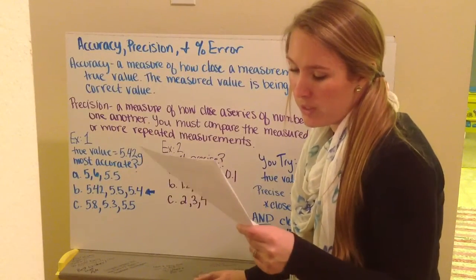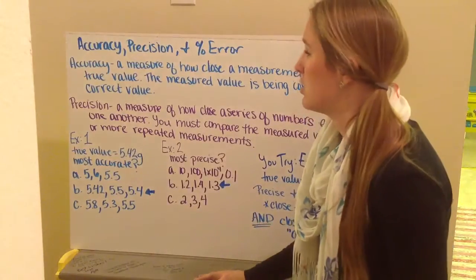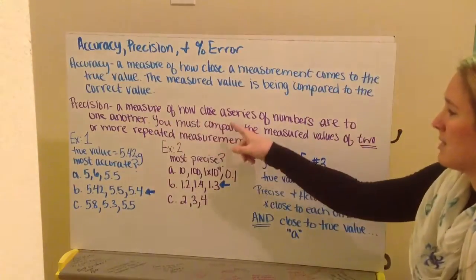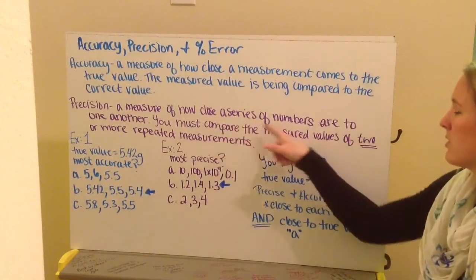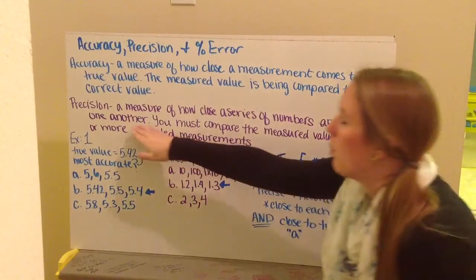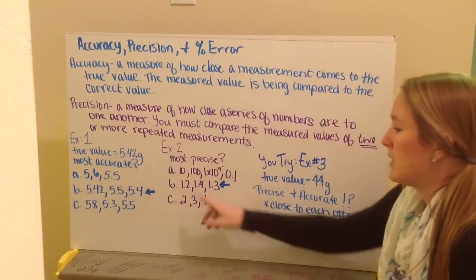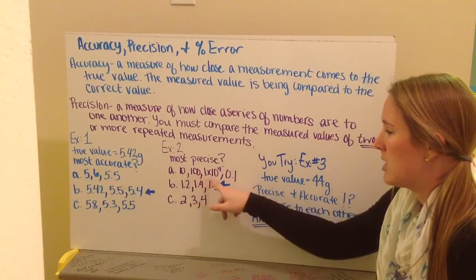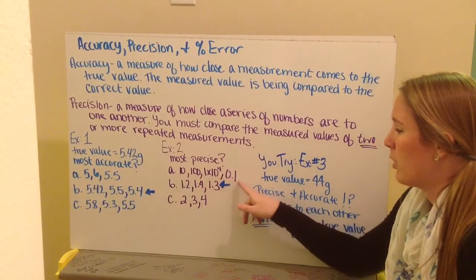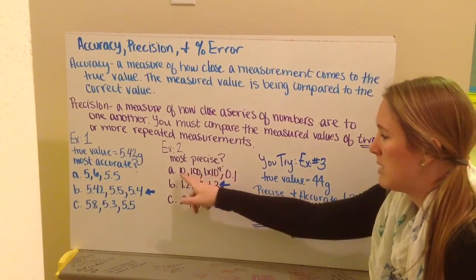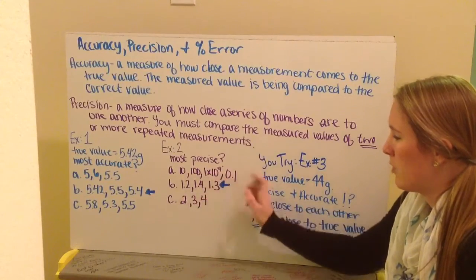Number 2 says which set of numbers has the most precision. Well precision is a measure of how close the series numbers are to one another. So my choices of 10, 100, 10 to the 4th, and 0.1. These have a very far range apart from each other.